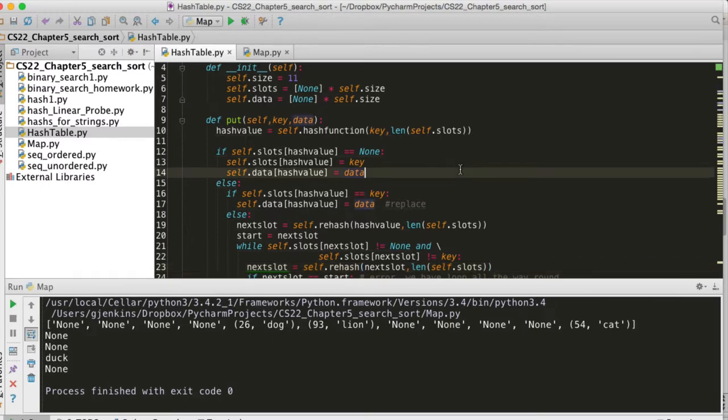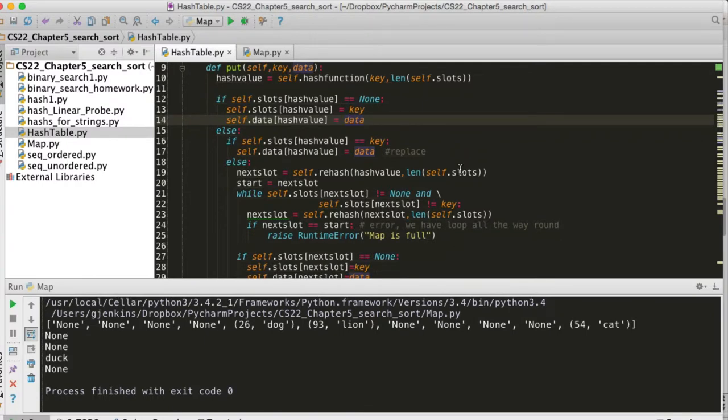So first it checks, if it's not empty, is it already there? So it checks, is the slots at the hash value I just computed already set to the key? If it is, we just replace the data. Otherwise, we have to go find where is the key.